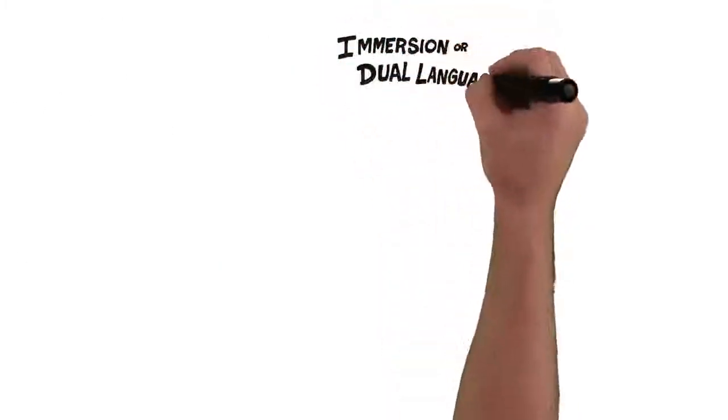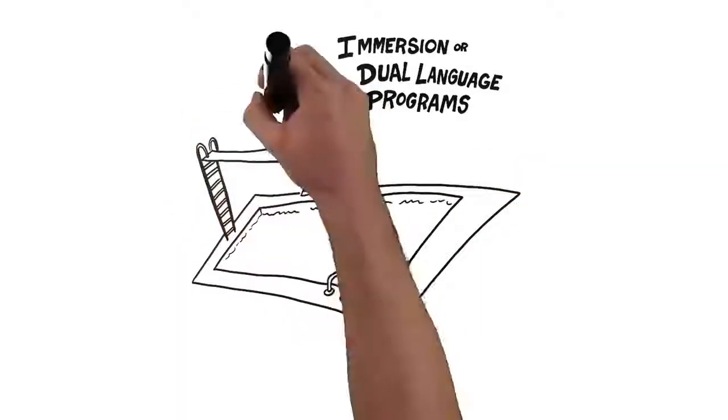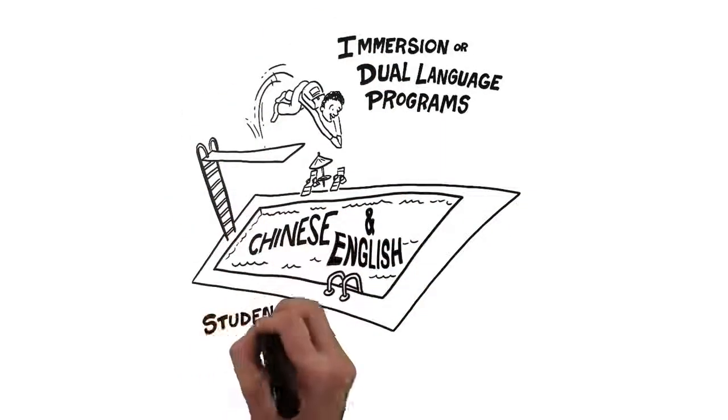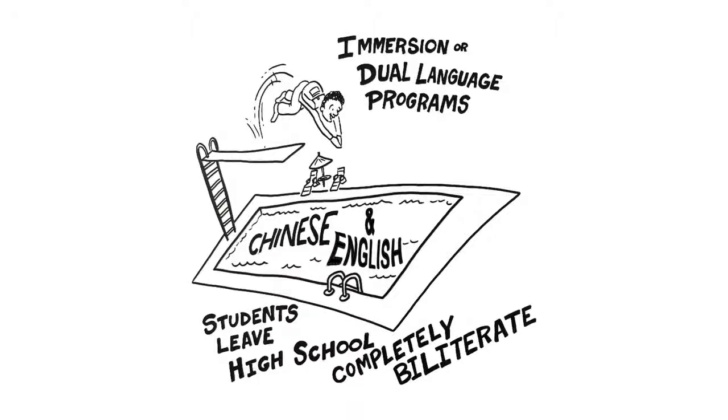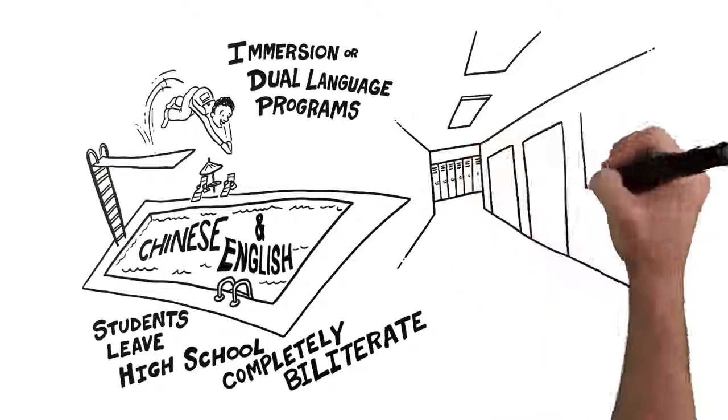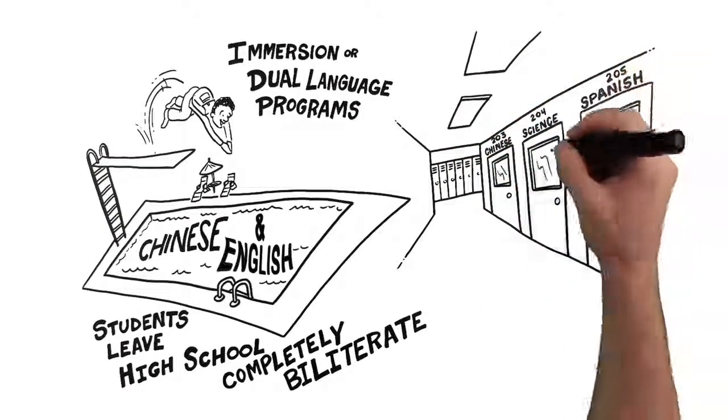Then there are immersion or dual language programs. The goal of these programs is for students to leave high school completely biliterate. And of course, some traditional schools teach second languages as one of many academic classes.